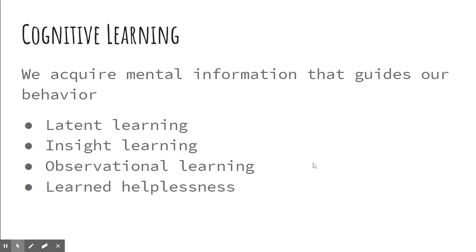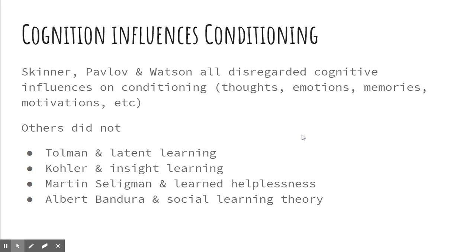We're going to talk about latent, insight, observational, and learned helplessness. The early behaviorists like Skinner, Pavlov, and Watson completely ignored cognition. They thought that things like emotions, memories, thoughts, and motivations had nothing to do with learning. They were really trying to move away from Freudian psychology, which they thought was not scientific enough. But in modern times, as we've increasingly recognized the impacts of cognitive functioning, we realized it absolutely is a portion of learning — the way we think about things, things that can happen just in our brain.